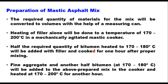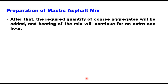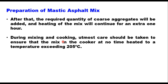Then fine aggregate and the other half of bitumen at 170 to 180 degrees centigrade are added to the prepared mix in the cooker. It is heated again at 170 to 200 degrees centigrade for another one hour. Then the required quantity of coarse aggregate is added and heating of the mix continues for an extra one hour.